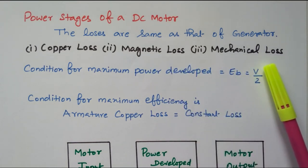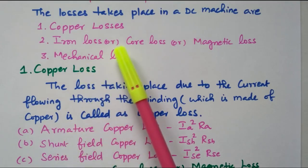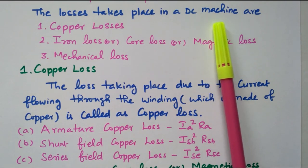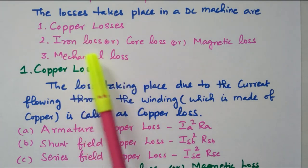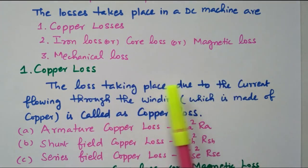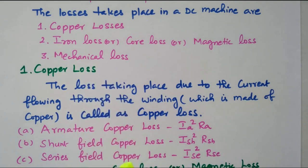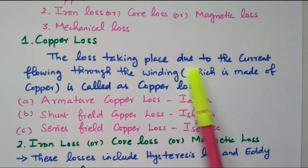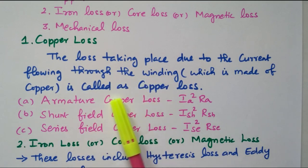Now we will see these losses in detail. The losses take place in the DC machine. DC machine means it can be used as either motor or generator. Copper loss, iron loss or core loss or magnetic loss, then the mechanical loss. The loss that takes place due to the current flowing through the winding is called the copper loss.